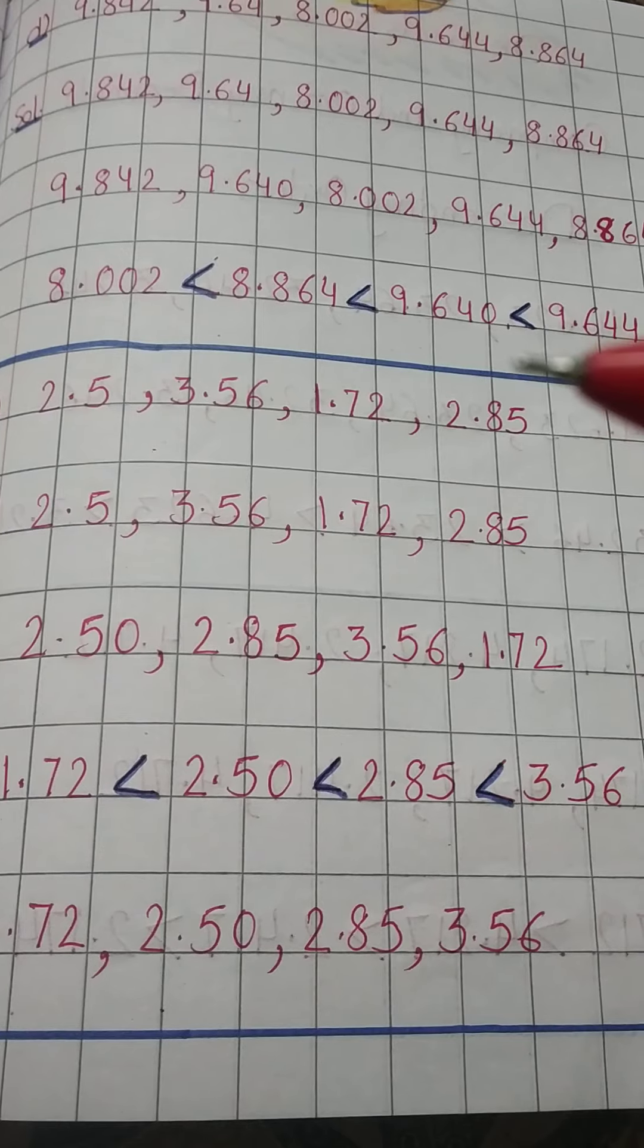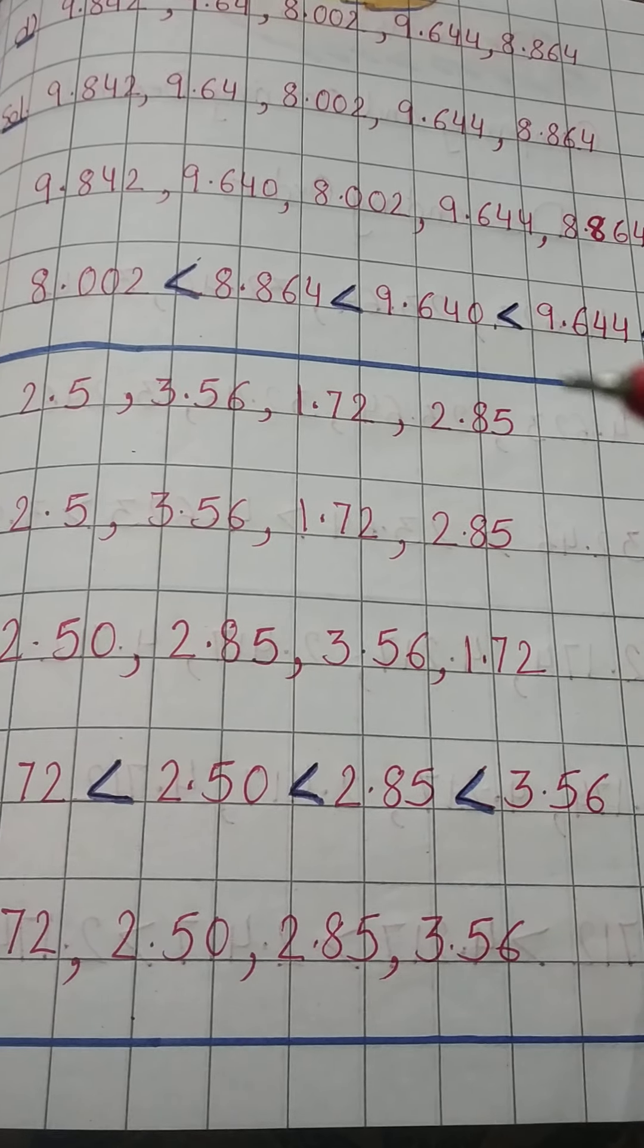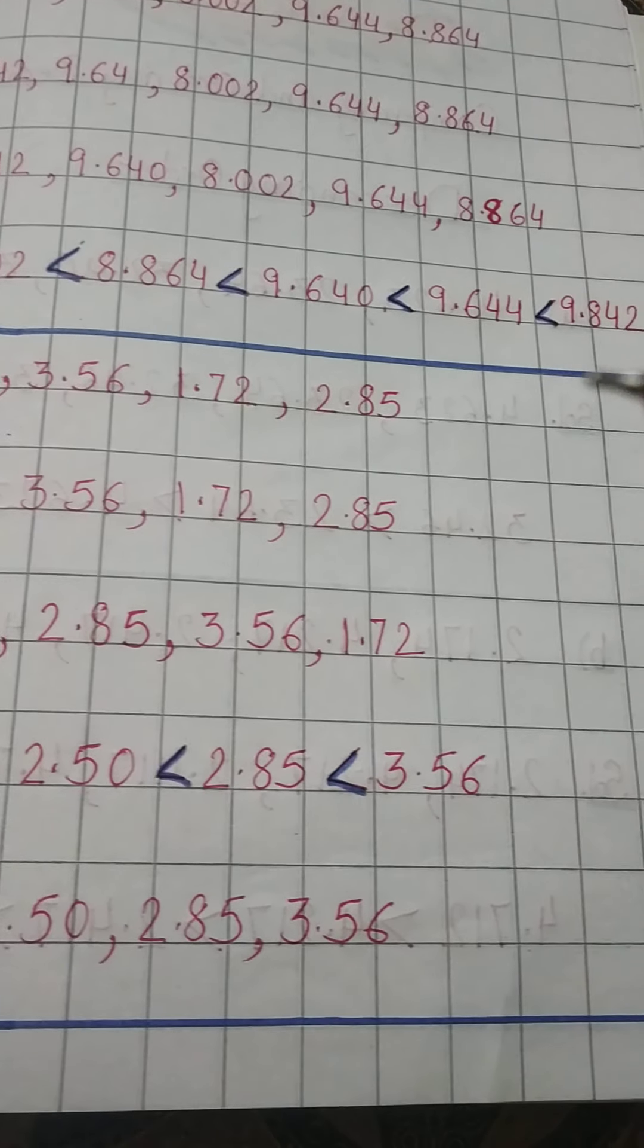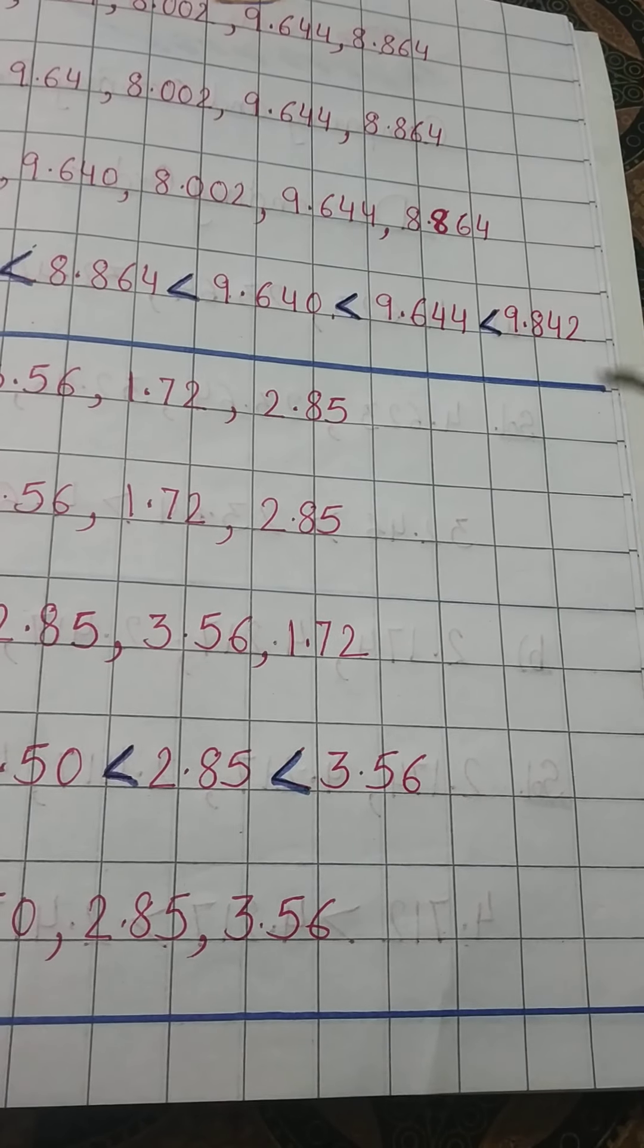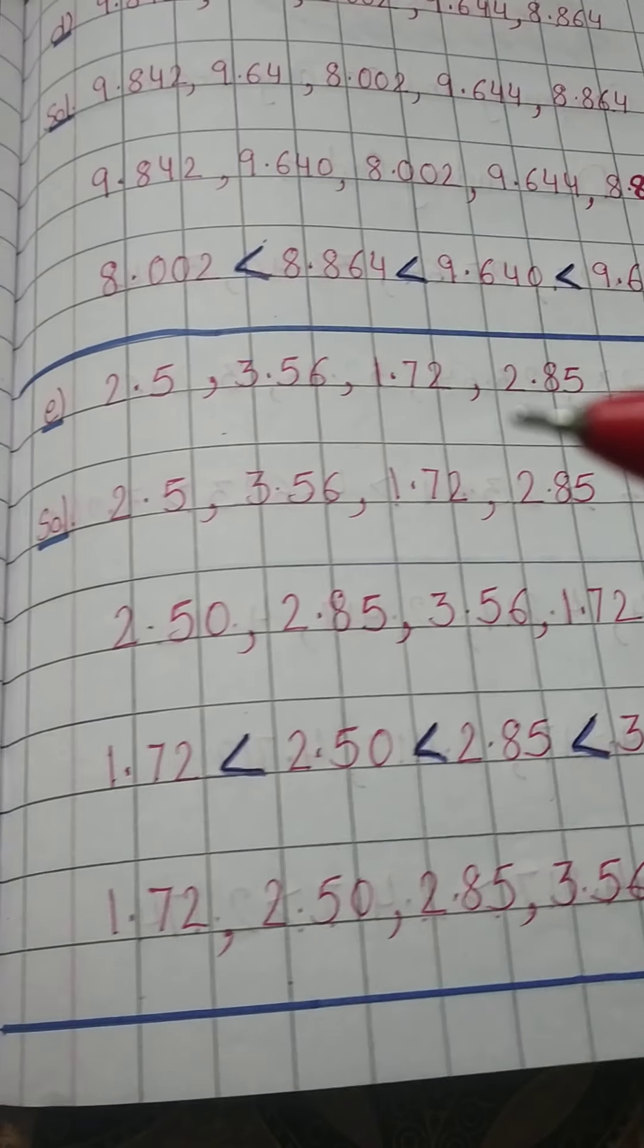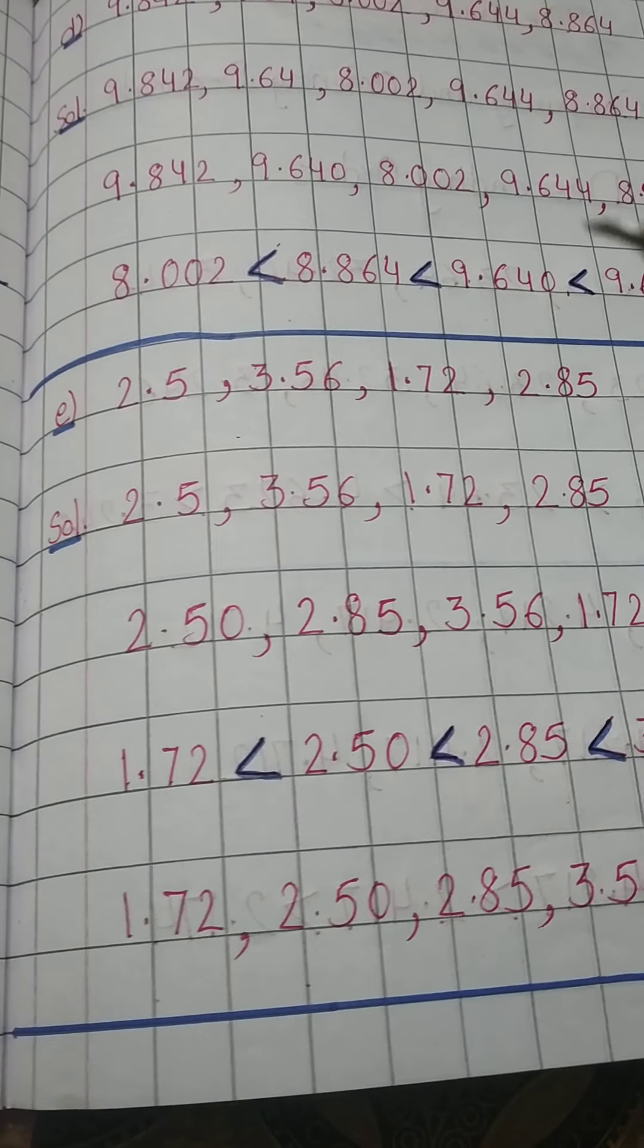So we will write 9.642 first, then 9.644, and in the last 9.842. So this is the ascending order of this one. You can write like this also.